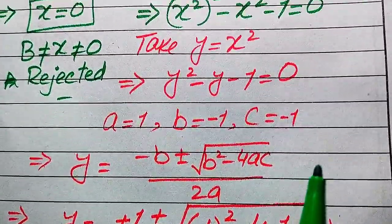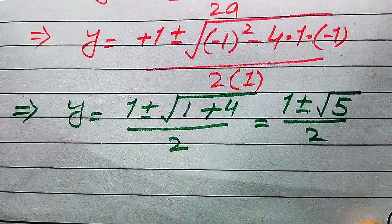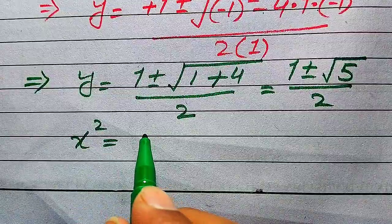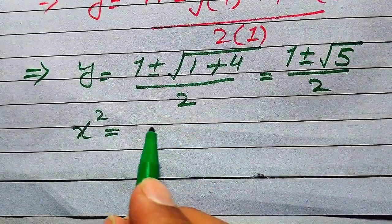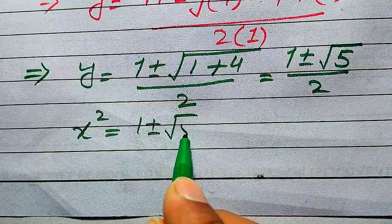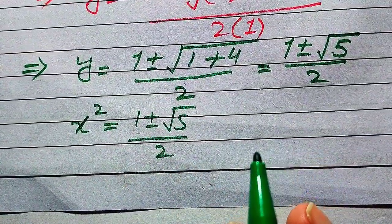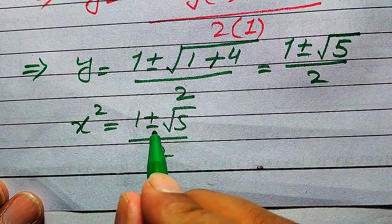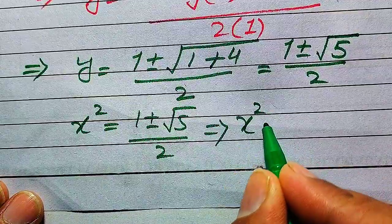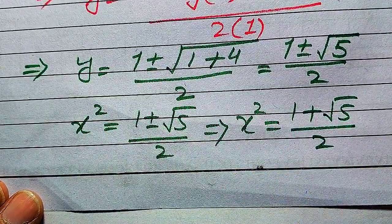Back-substituting y = x², we get x² = (1 ± √5) / 2. Since we are solving for positive side lengths, we reject the negative case, leaving x² = (1 + √5) / 2.